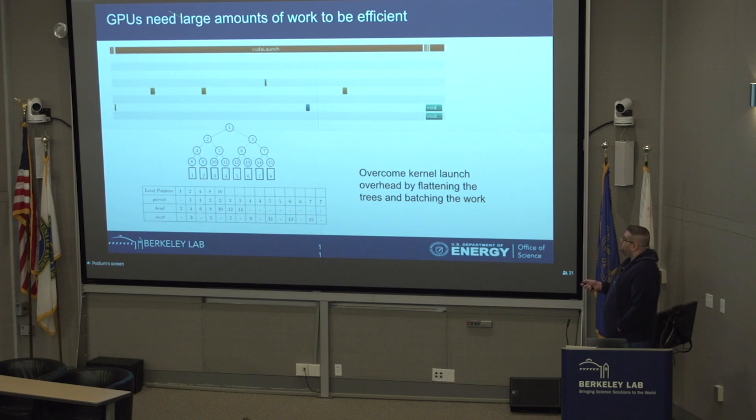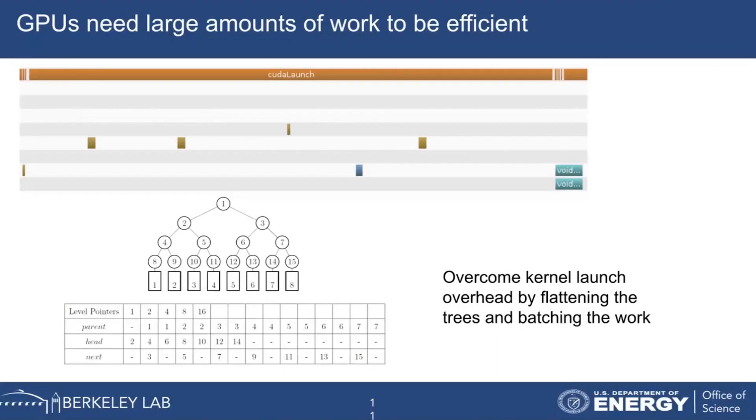To overcome this kernel launch overhead, we're going to flatten our trees by level and then launch all of the work at once, all the work within the level that can be parallelized at once using a single kernel launch, using batched kernels, like within magma and kblas.